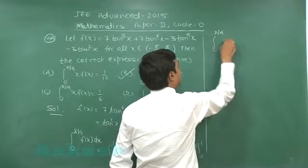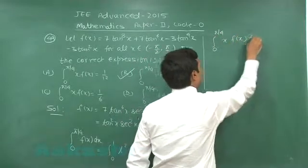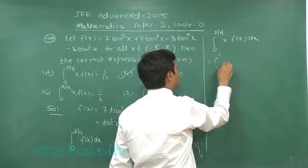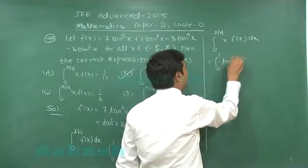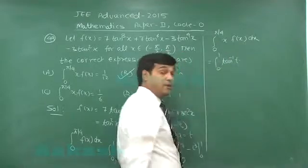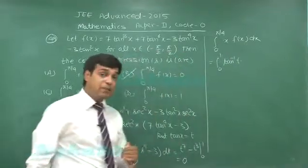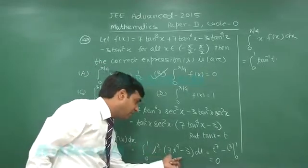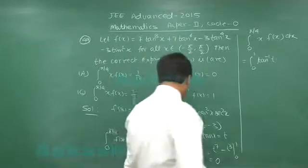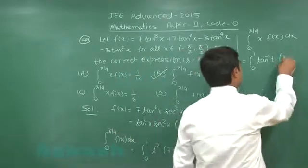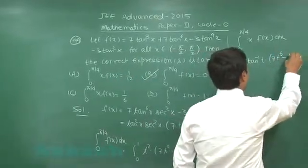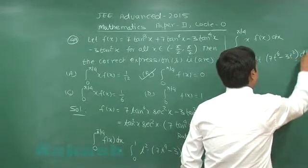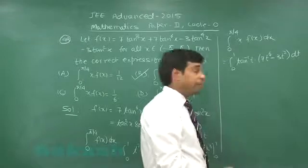Let us check out x·f(x), integral 0 to π/4 x·f(x)dx. Again with the same substitution, we get 0 to 1. This time tan inverse t will occur because we have the term x multiplied with f(x) and same term t^2 into 7t^4 minus 3 into dt. We can write it here, this is (7t^6 minus 3t^2)dt.